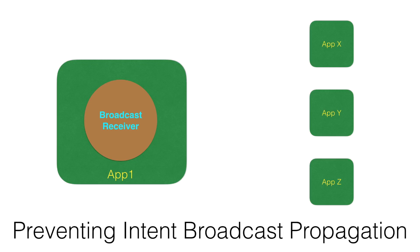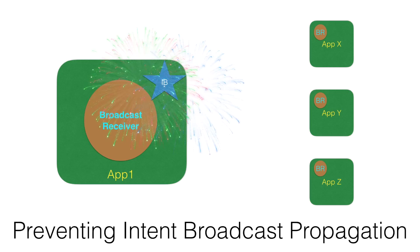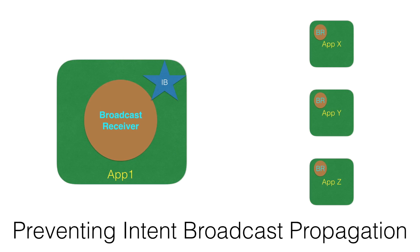There could be a reverse scenario also. The reverse scenario is you basically don't want any intent broadcast to happen outside the app. What I mean is assume that app one has a broadcast receiver and app XYZ also has a broadcast receiver with the same action and category values. And if a broadcast intent happens, then all the broadcast receivers will get triggered — you don't want that to happen.